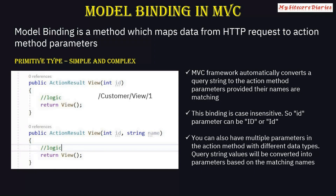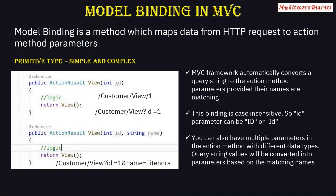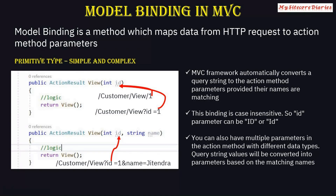For example, if you have a URL like 'customer/view/1', it maps to the action method where you have an integer 'id', so 'id' gets the value of 1. With another URL like 'customer/view?id=1', 'id' will also have value 1. And with 'customer/view?id=1&name=Jitendra', 'id' will be 1 and 'name' will be 'Jitendra'. So your query string parameters get mapped to the action method parameters.